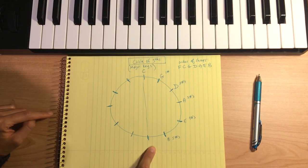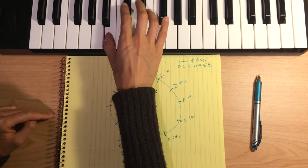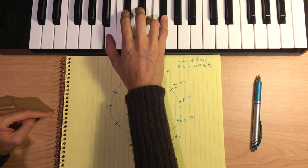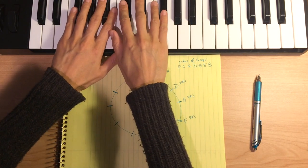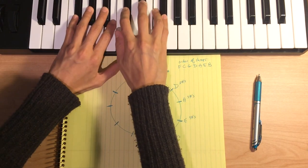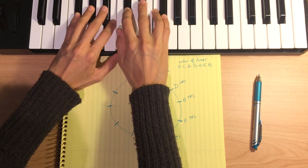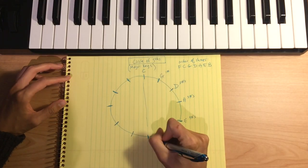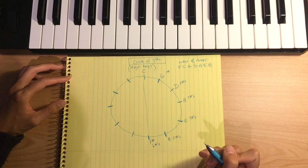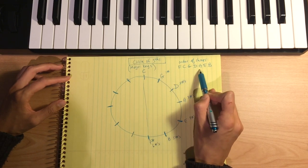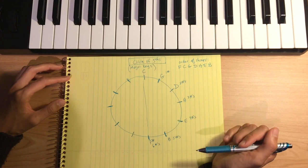Now we're going to go to the scale that has six sharps, going up a fifth from B major — one, two, three, four, five. We get to F sharp. F sharp major has six sharps: F sharp, C sharp, G sharp, D sharp, A sharp, E sharp. Since we have seven notes in our scale, we can sharp up to seven notes.